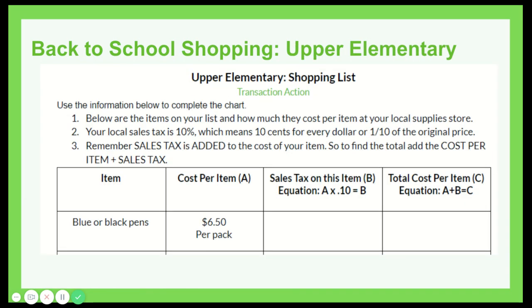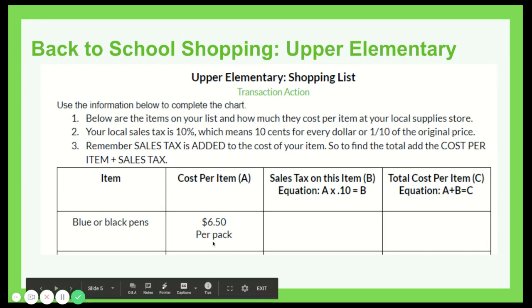If you're in the upper elementary grades, you can make things a little bit more challenging. You're going to have a list of items and how much they cost, and you're going to calculate the sales tax using an equation. Let's pretend that your local sales tax is 10%, which is actually pretty high. That would mean 10 cents for every dollar you spend, or one-tenth of the original price, gets added on at the end as sales tax. Don't forget: sales tax is added to the cost of your item, so to find the total cost you're going to have to add the cost per item plus sales tax.